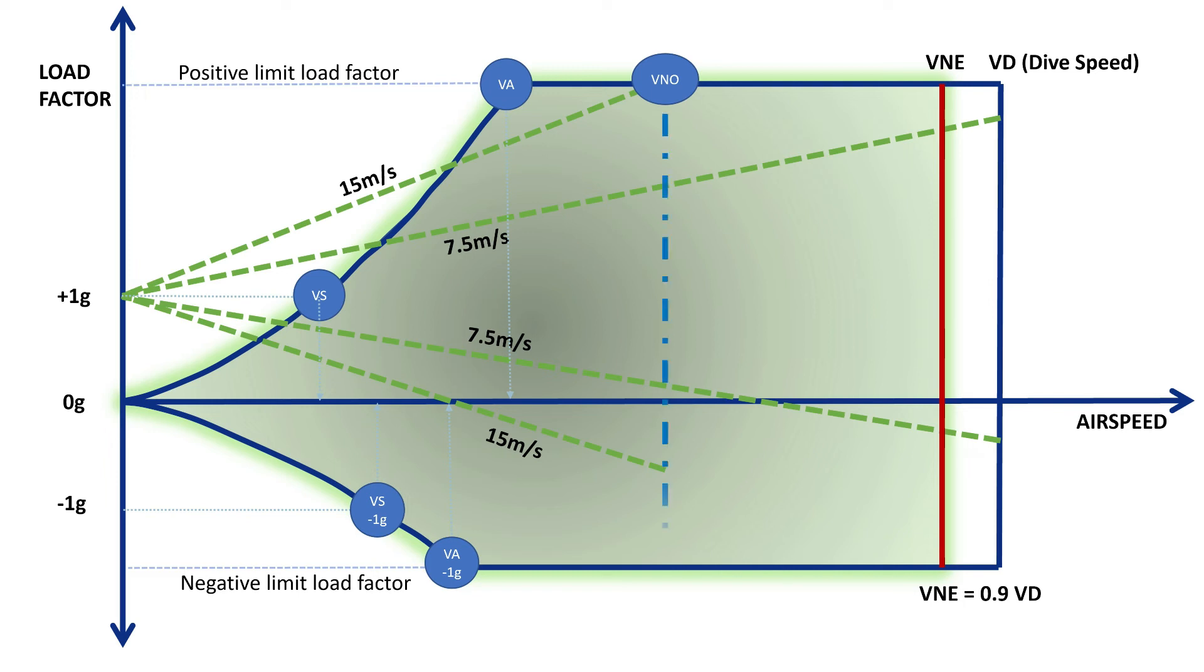Above VNO the maximum gust load requirement decreases linearly to the lower limit at VD. That's why flying at speeds above VNO is restricted to smooth air. So now we can close off the gust envelopes and observe that they are contained within the maneuvering envelope.